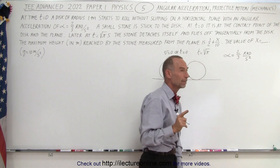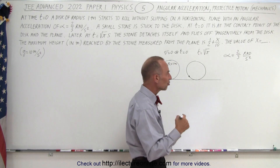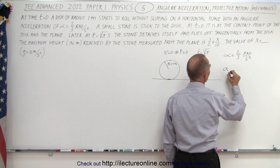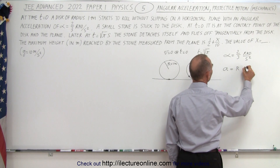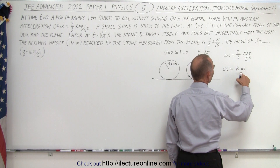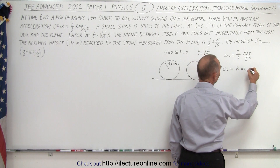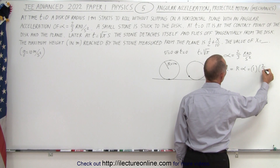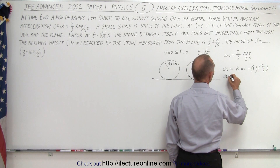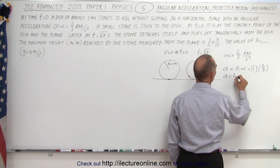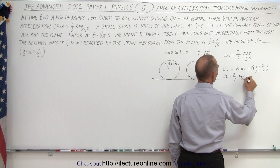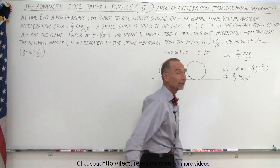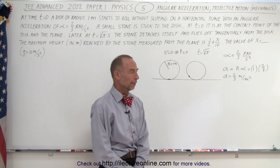Now let's convert to tangential acceleration. Tangential acceleration is equal to r times angular acceleration. In this case r is one, so this is equal to one times two-thirds, which equals two-thirds meters per second squared. So the disk is rolling along accelerating at two-thirds meters per second squared.